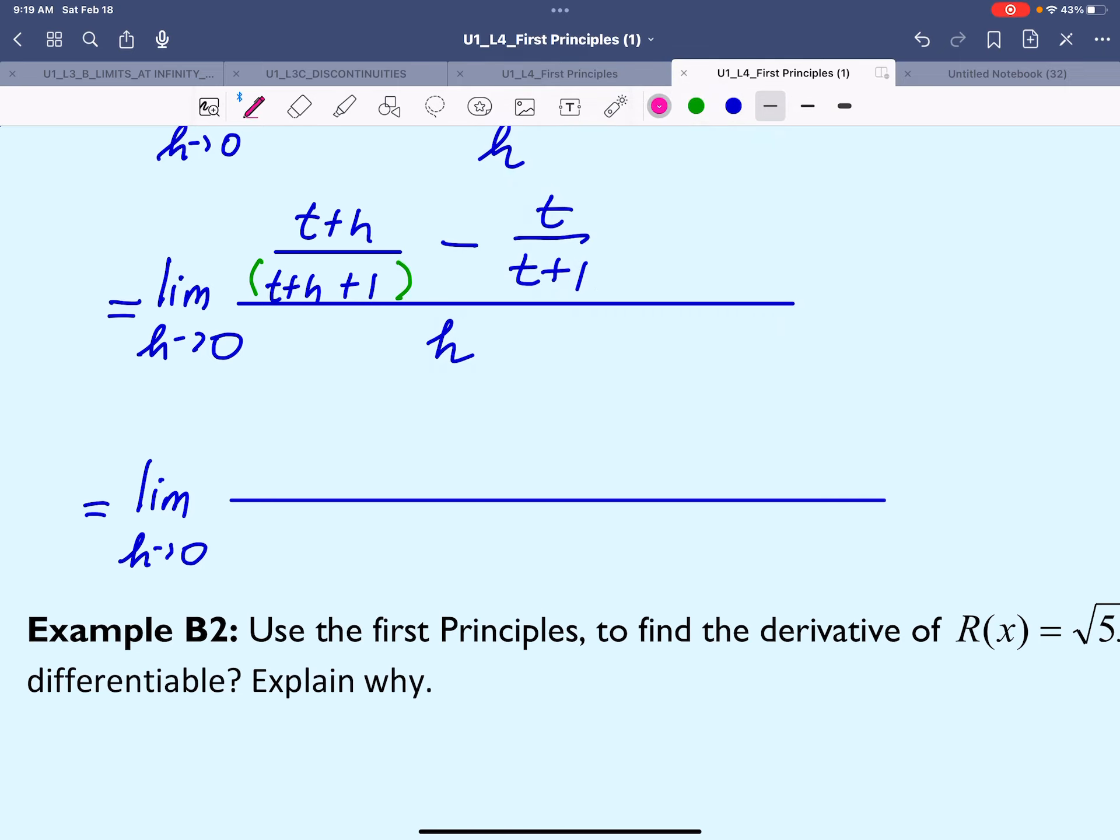We'll multiply by (t+1) both numerator and denominator in the first fraction, and multiply by (t+h+1) both numerator and denominator in the second fraction. Now we're happy that they both have same denominators, so we can bring them together in the same fraction.